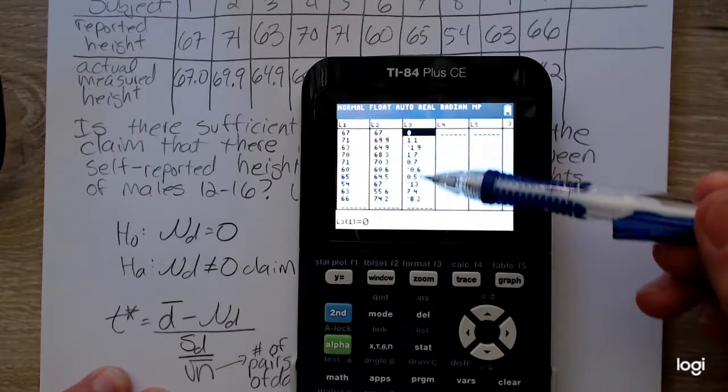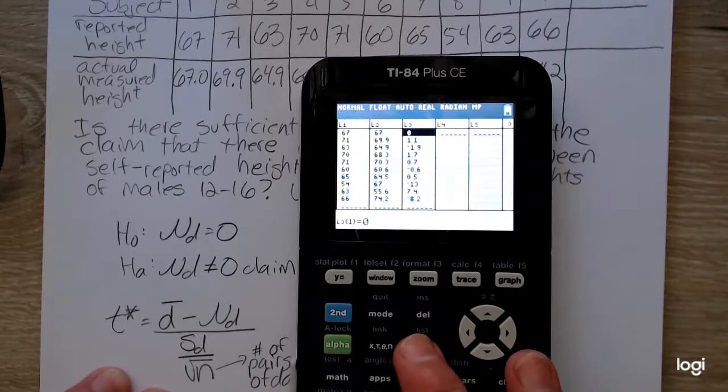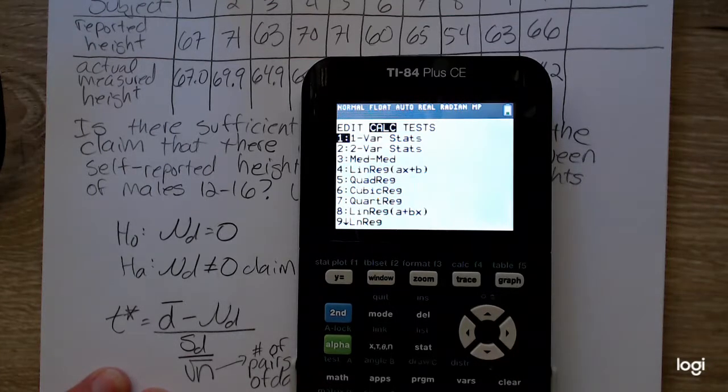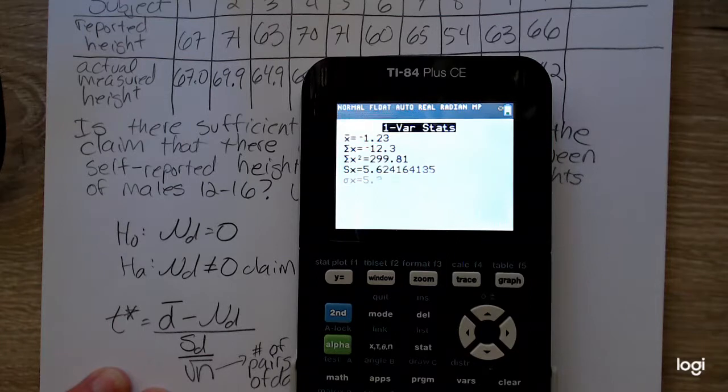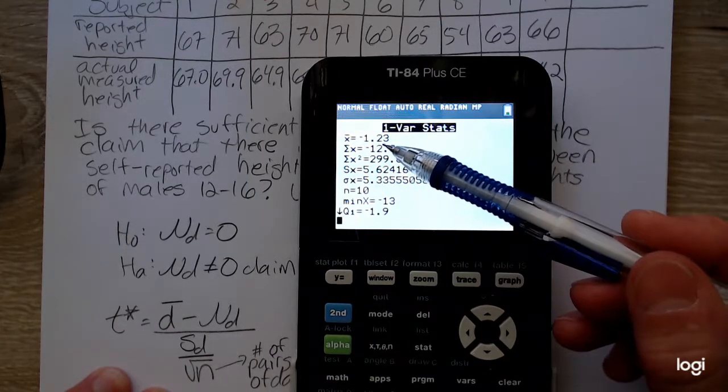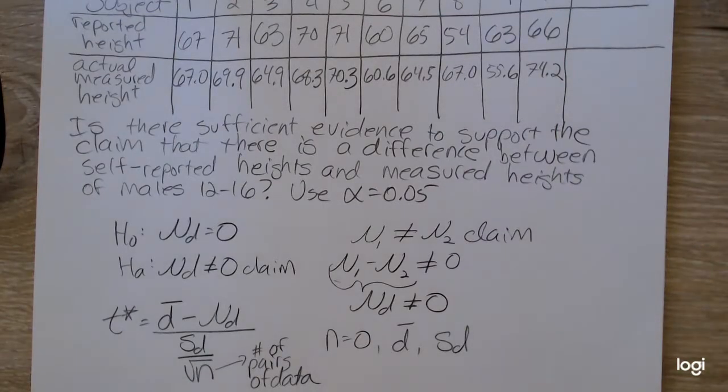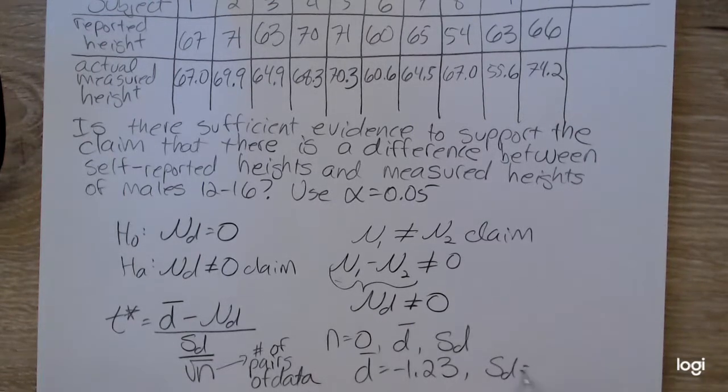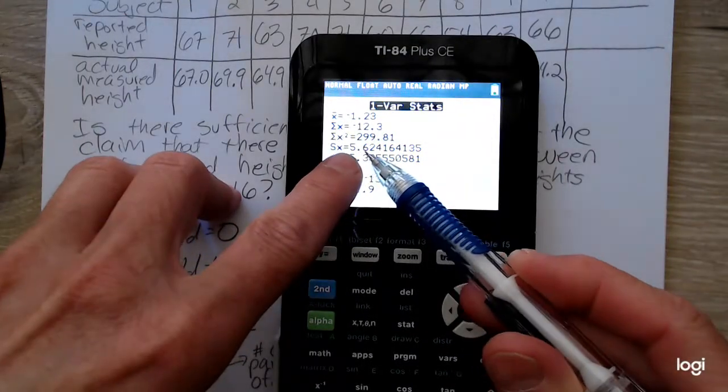D bar will be the sample mean for this third column. To get that, go to your stat menu, go to calc, select one variable statistics, and those differences are in list three. My average difference d bar is negative 1.23. And that standard deviation for that third list is 5.624.